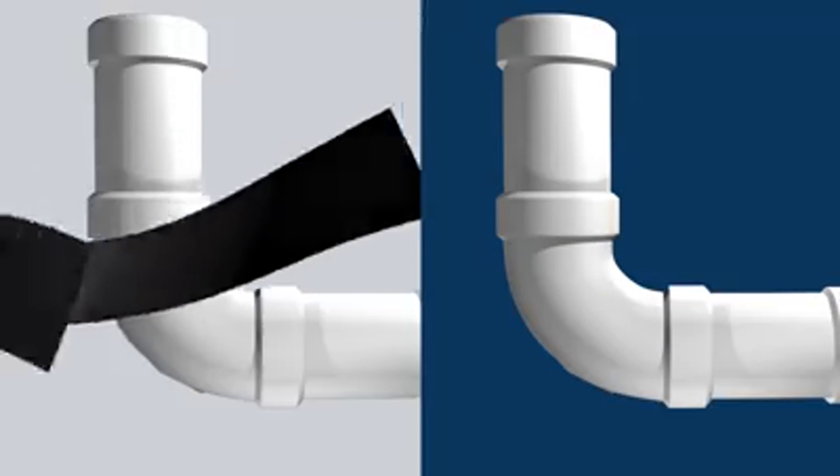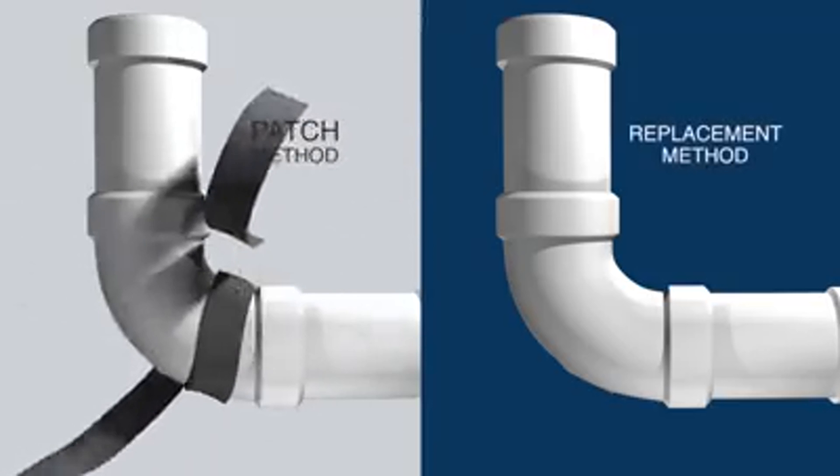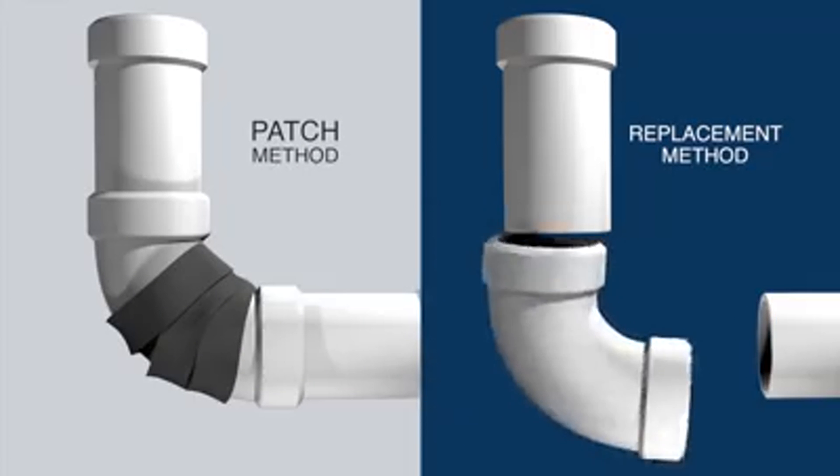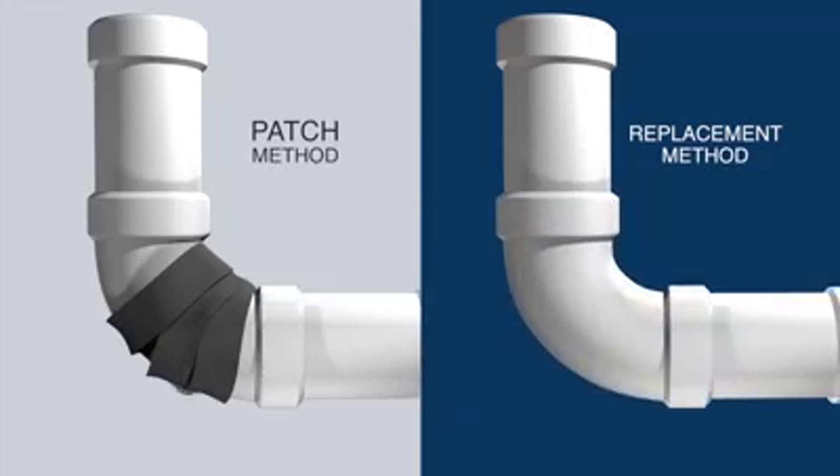That broken pipe can either be patched or the pipe section replaced altogether. Replacement is clearly the superior solution since a patch may just give way to leaks again.